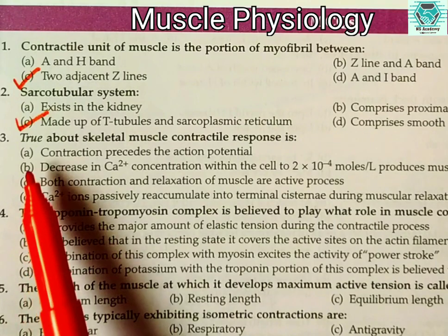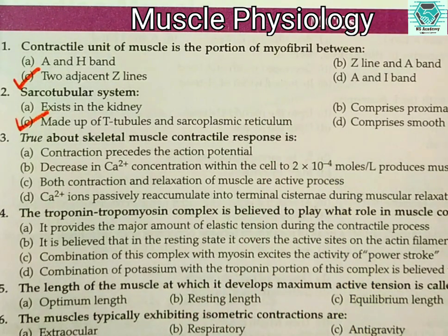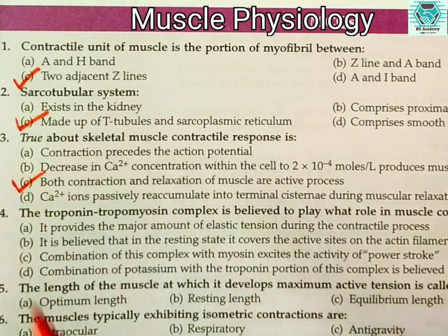Number three: true about skeletal muscle contractile response is — (a) contraction precedes the action potential, (b) decrease in Ca²⁺ concentration within the cell to 2×10⁻⁴ moles per liter produces muscle relaxation, (c) both contraction and relaxation of muscle are active processes, or (d) Ca²⁺ ions passively re-accumulate into terminal cisternae during muscular relaxation? The right answer is (c): both contraction and relaxation of muscle are active processes.